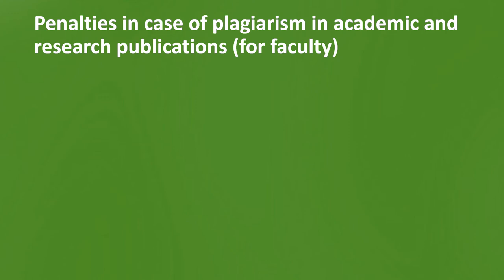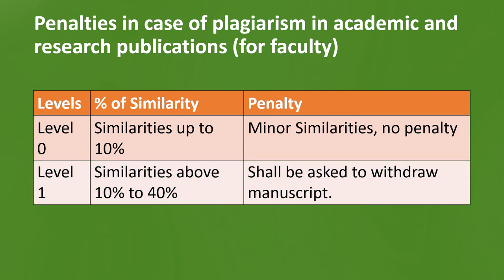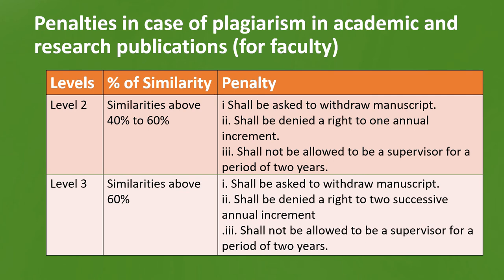What are the penalties in case of plagiarism in academic and research publications in case of faculty? In case of faculty, if similarity is up to 10%, it is considered minor similarity and no penalty is imposed. If it is between 10 to 40% — Level 1 — they shall be asked to withdraw the manuscript, rework on it, and submit later. If the similarity is from 40 to 60%, they shall be asked to withdraw the script, may be denied at least one annual increment in their salary, and may not be allowed to be a supervisor for a period of 2 years. If the similarity is above 60% — Level 3 — they shall be asked to withdraw the manuscript, will be denied two successive annual increments, and shall not be allowed to be a supervisor for a period of 2 years.